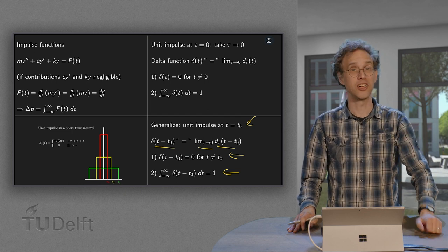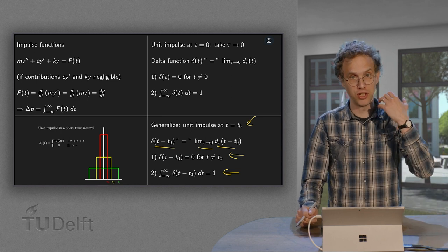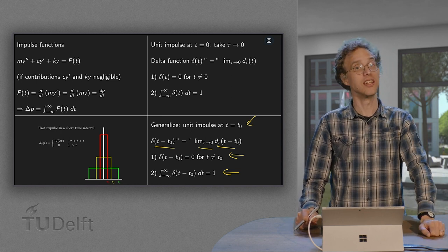And that is why it's called an impulse function, because it gives a unit impulse at t equals t₀.